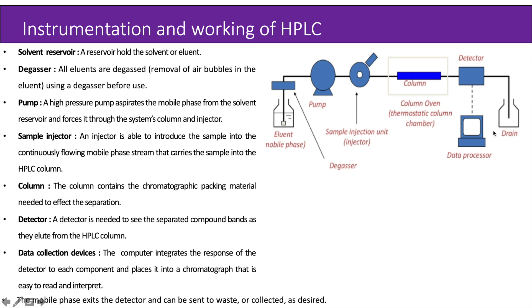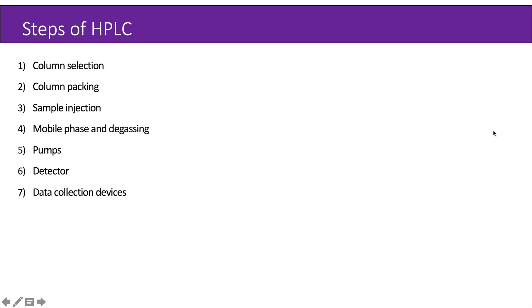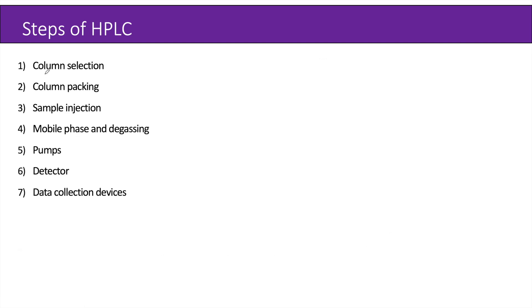Let us now see the different steps of HPLC in detail. First is column selection, then column packing, sample injection, mobile phase and degassing, pumps, detectors and data collection devices.